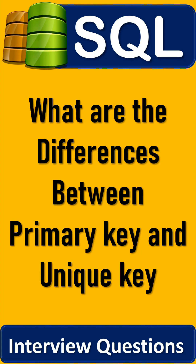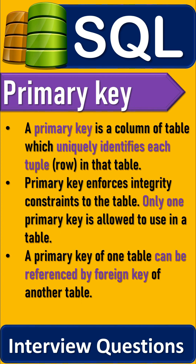In this video, we are going to define what are the differences between primary key and unique key in SQL. A primary key is a column of a table which uniquely identifies each tuple or row in that table. Primary key enforces integrity constraints to the table.